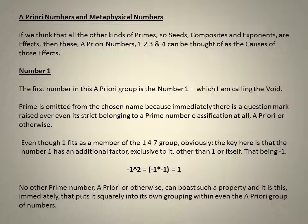Minus 1 squared equals 1. No other prime number, a priori or otherwise, can boast such a property and it is this immediately that puts it squarely into its own grouping within even the a priori group of numbers.